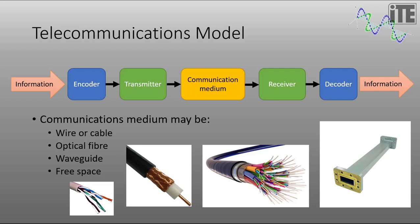The model that we're going to be using for telecommunications in this video series is shown here. We put information in, it goes into an encoder, and then a transmitter, which then uses a communication medium to send a signal, which is received by the receiver and decoded. And we hope that the information that we get out is a very close representation of the information that we put in, but it's not always exactly perfect.